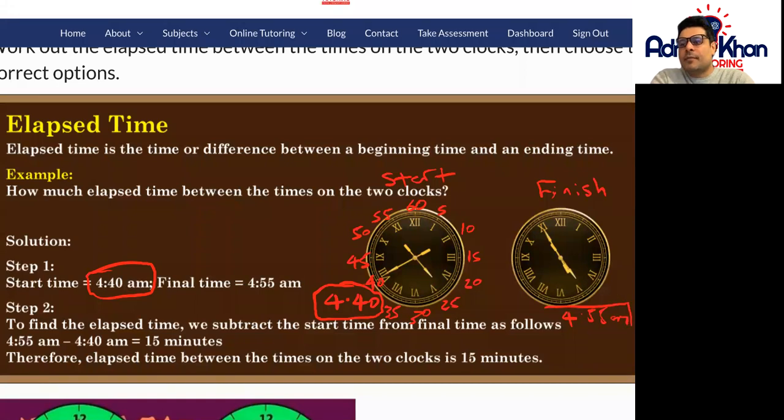Because there's five minutes left until five o'clock. Now because we have these two times of 4:55 take away 4:40, we need to work out the difference between 4:55 and 4:40. From 4:40 let me count up in five, five minutes up to 4:55.